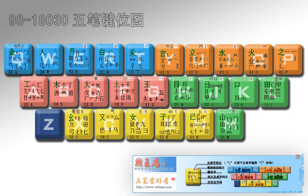Once the algorithm is understood, one can type almost any character with a little practice, even if one hasn't typed it before. Muscle memory will ensure that frequent typists using this method don't have to think about how the characters are actually constructed, just as the vast majority of English typists don't think very much about the spelling of words when they write.